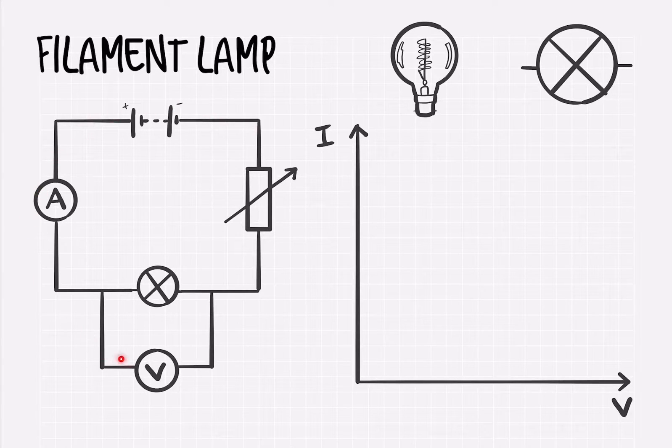You will notice that as before we've got the circuit set up in order to collect the data, but this time we've got a light bulb in place of the resistor or wire from the previous video.